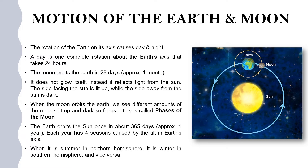When the Moon orbits the Earth, we see different amounts of the Moon's lit up and dark surfaces. This is what we call the phases of the Moon.